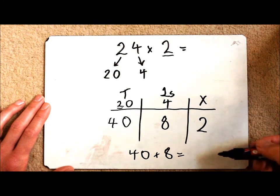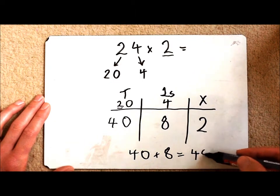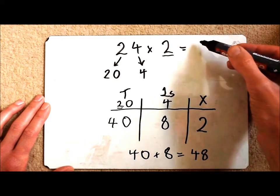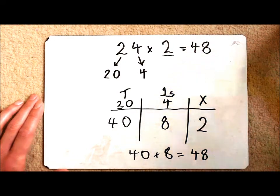Now I'm going to do this mentally. You could do another written method if you wanted to. But I know that 40 plus 8 is 48. So 24 times 2 is 48 using the grid method.